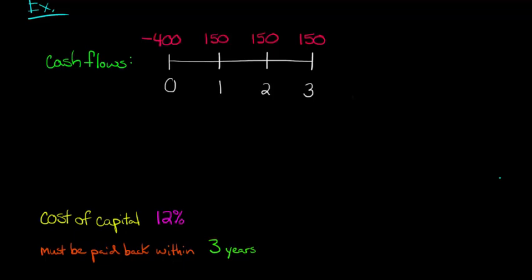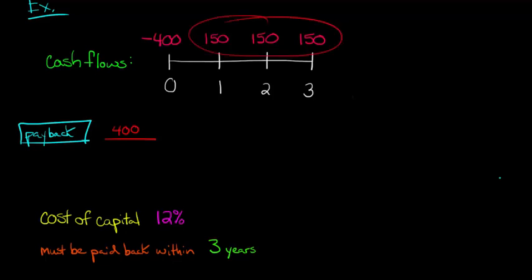Let's calculate the payback method first because that's simpler, right? So we're just going to take the investment of $400, and I'll just put over here payback so you know we're doing the payback method. For payback we're going to take $400 and we're going to divide that by the annual increase in cash flow, $150 a year. So just take the investment divided by the increase in cash flow.